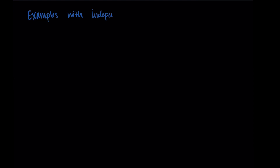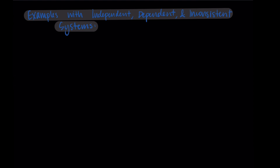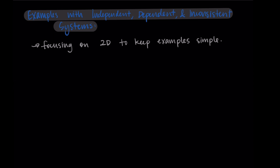Welcome back. In this video we're going to work through some examples with independent, dependent, and inconsistent systems. In my past videos I showed only independent systems — specifically systems of linear equations. Now we're going to do examples involving these other types of systems. I'm going to focus on only the 2D cases, so cases with just two variables, x and y, to keep everything simple and the video manageable.